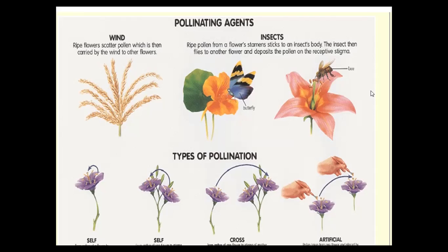In angiosperms, the male gametophyte is found in the anther, which is part of the stamens. The female gametophyte is found in the pistil or carpel. The transfer of pollen from anther to stigma is pollination. Pollination occurs via biotic and abiotic factors. Abiotic factors include wind — called anemophile — and water — called hydrophile.